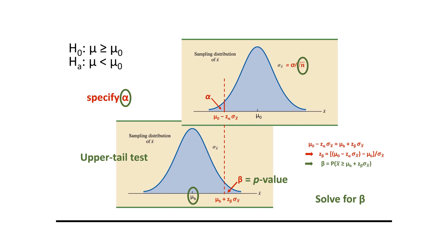In the example illustrated here, beta corresponds to the p-value of an upper tail hypothesis test. And this concludes our presentation on type 2 error.